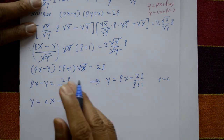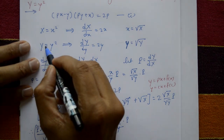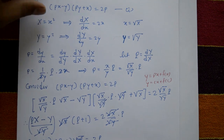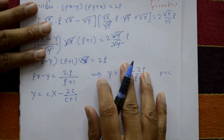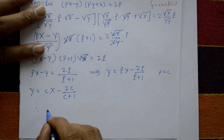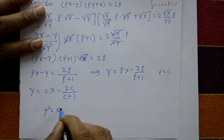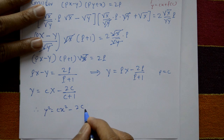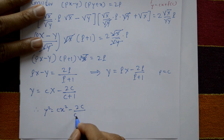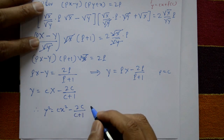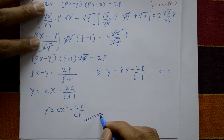Back-substituting capital Y = y² and capital X = x², the required general solution of the Clairaut equation is: y² = cx² - 2c/(c + 1).